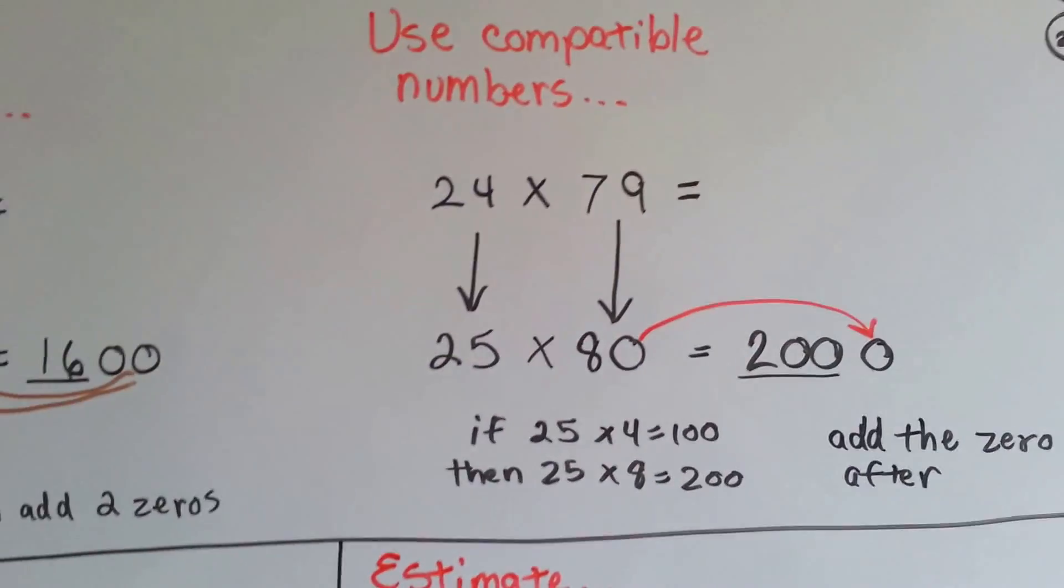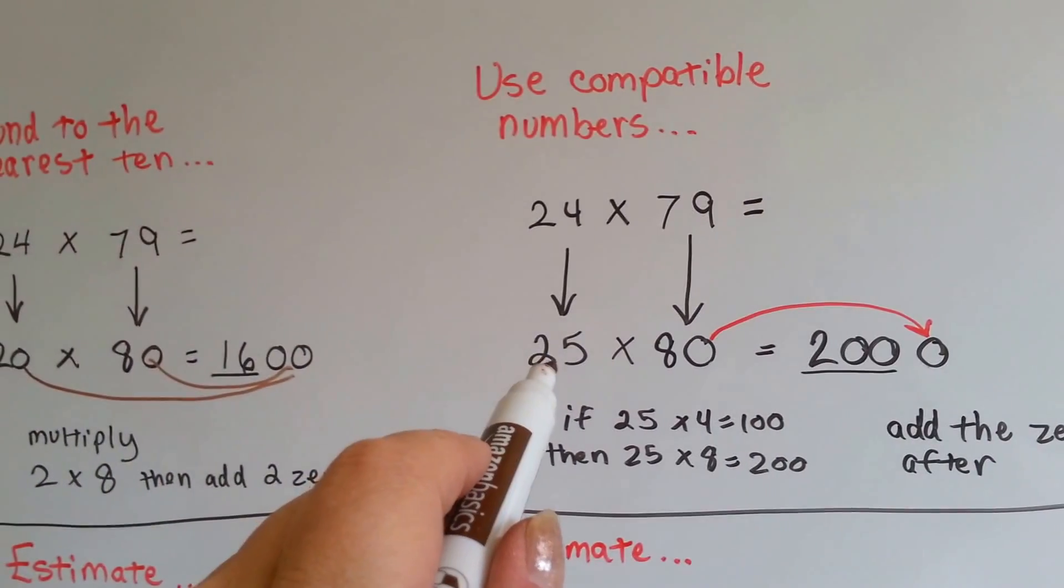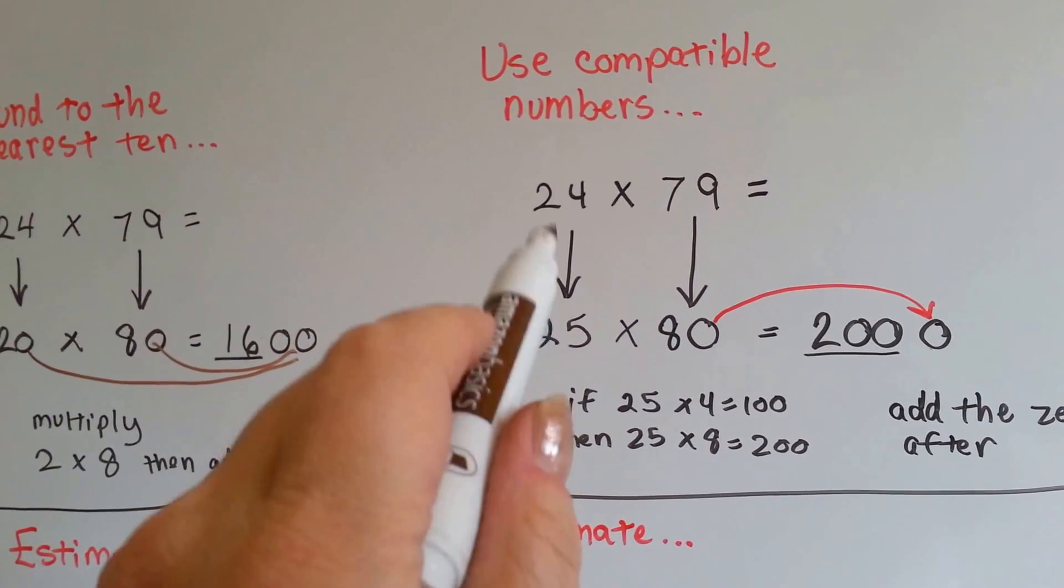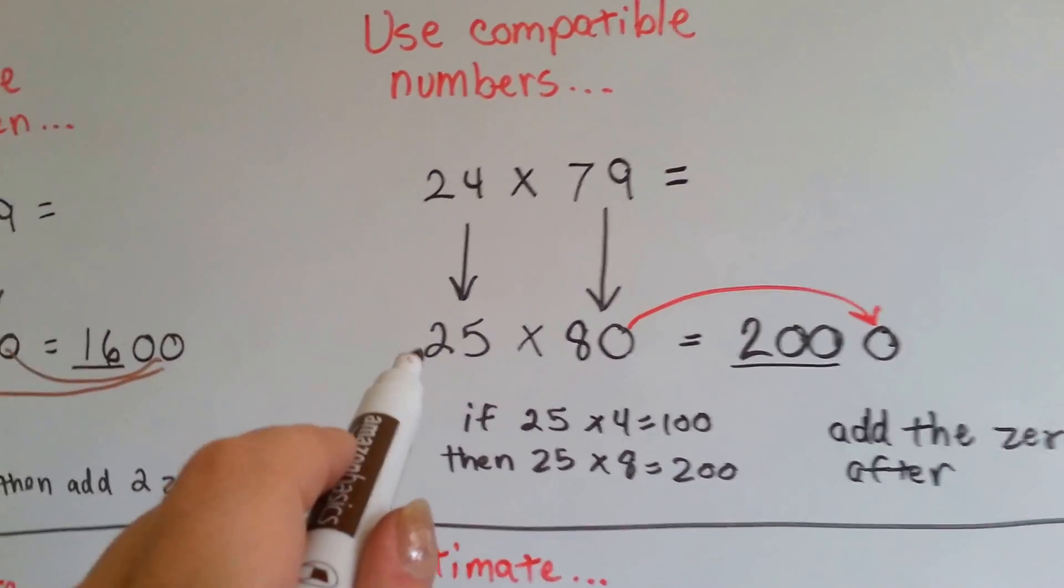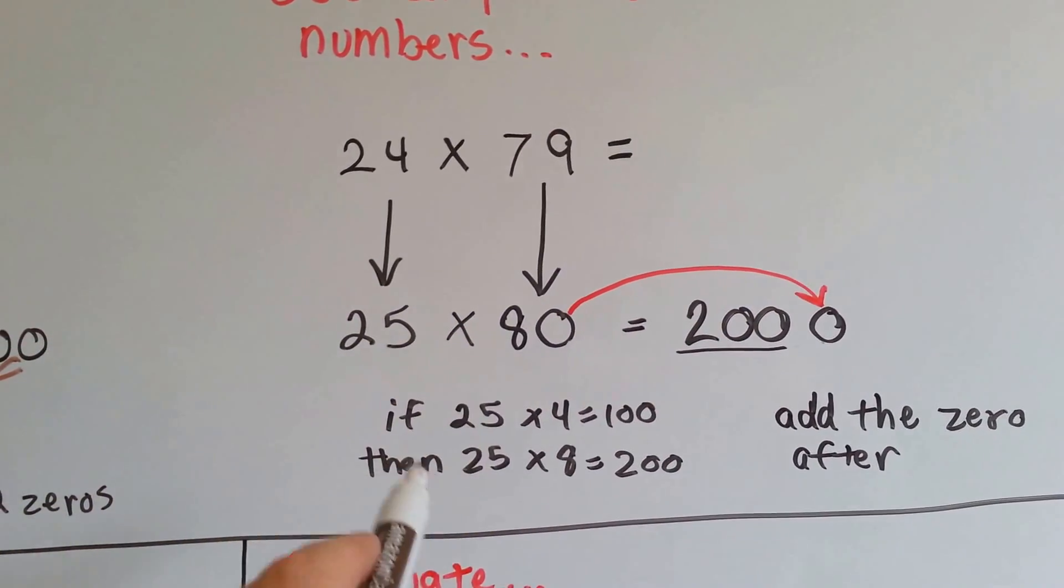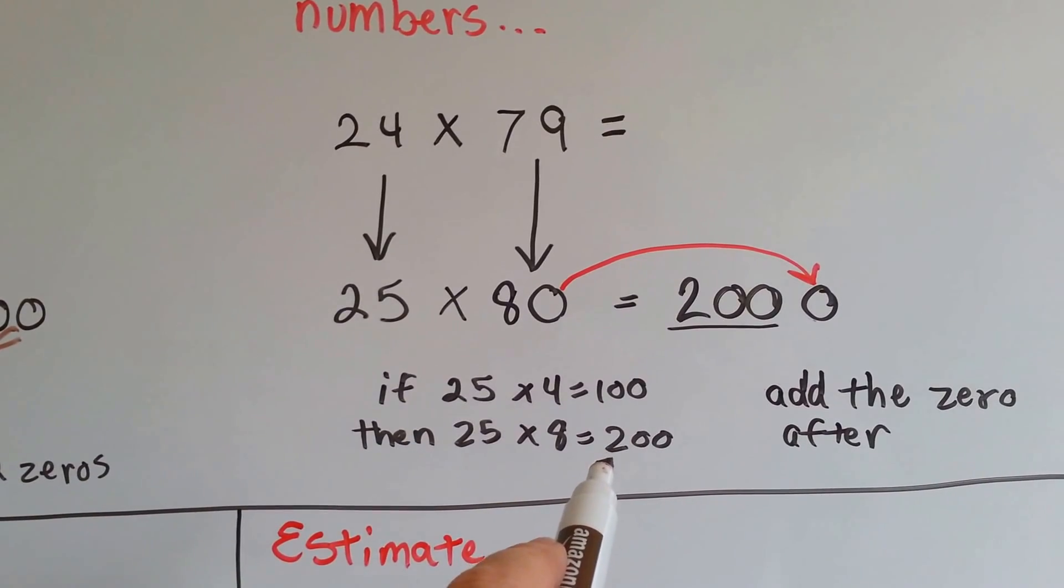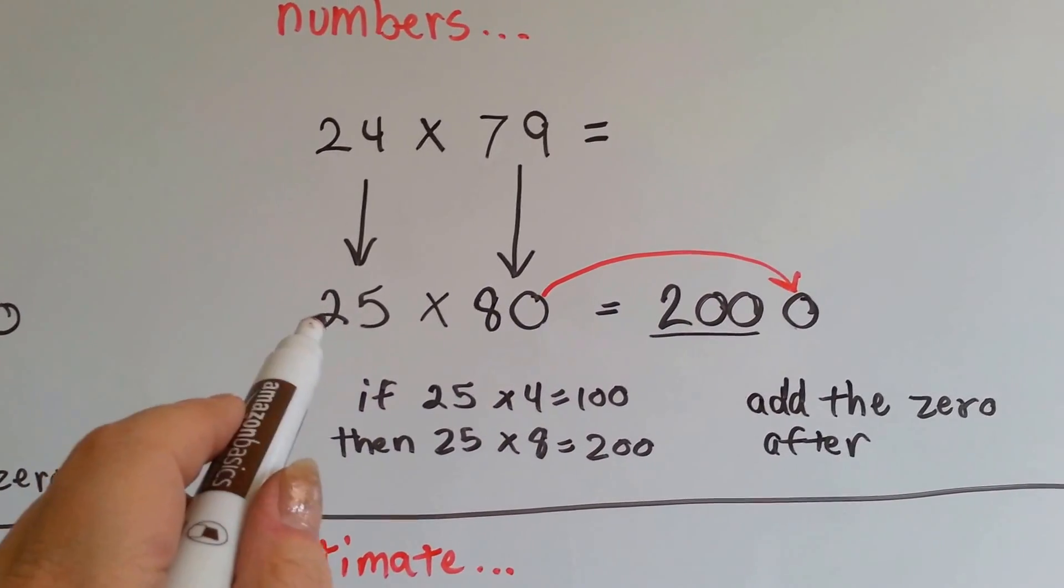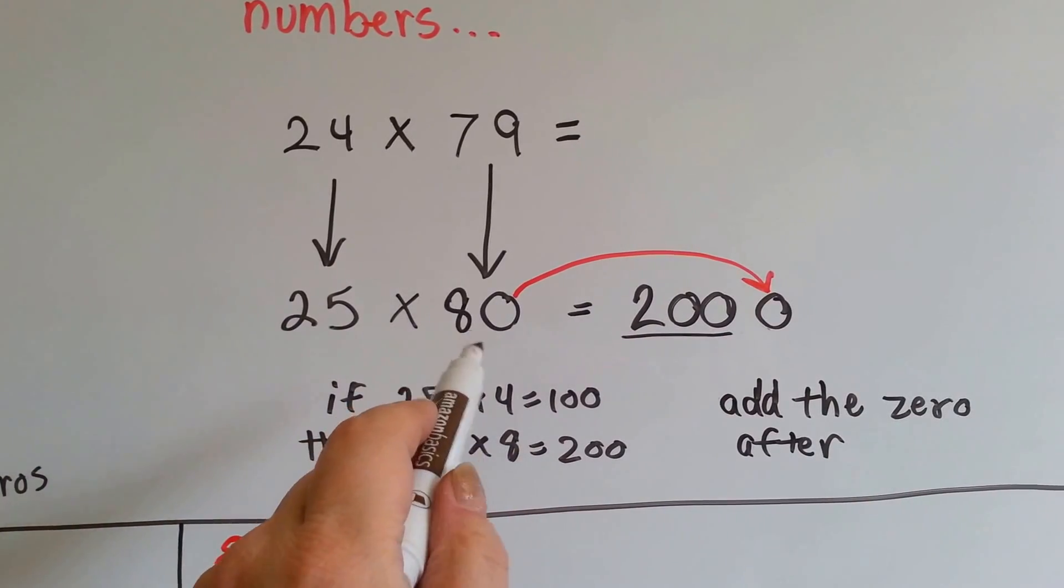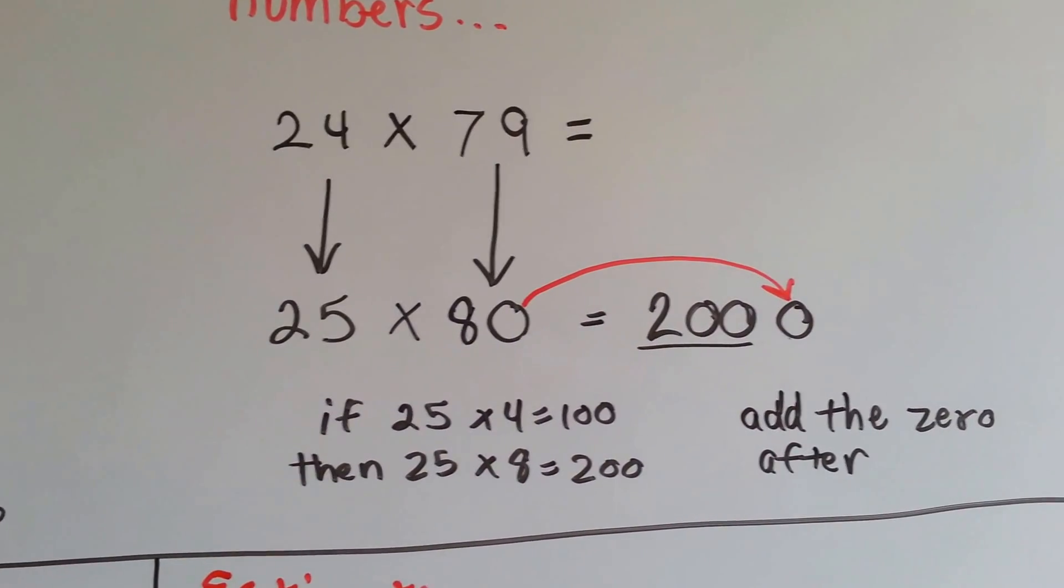And then using compatible numbers for the twenty-four and the eighty. Twenty-four is really close to twenty-five, so instead of rounding it down to twenty, we could just say it's really close to twenty-five, and seventy-nine rounds to eighty. Twenty-five times eight, if twenty-five times four is one hundred, then twenty-five times eight is two hundred. It's two of them. Then we take the zero from the eighty, because we did twenty-five times eight, and we add it on to the end of the answer, and then we get two thousand.